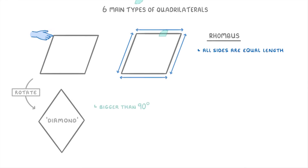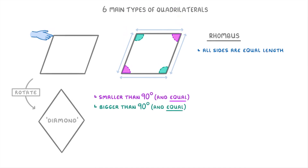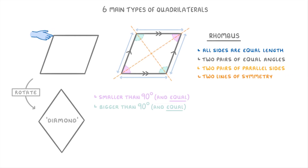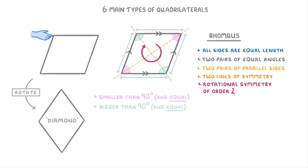Because a rhombus came from a square, all four sides are equal length. But because it's been pushed over, the angles aren't 90 degrees anymore. Instead, two of them will be bigger than 90 degrees and equal to each other, and the other two will be smaller than 90 degrees and equal to each other. So in total, rhombuses have two pairs of equal angles. They also have two pairs of parallel sides, and two lines of symmetry and rotational symmetry of order 2.